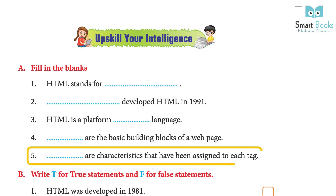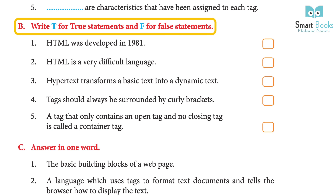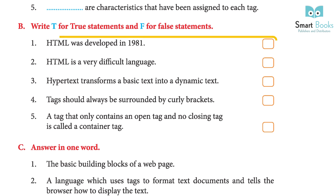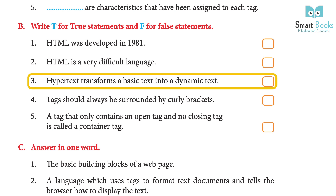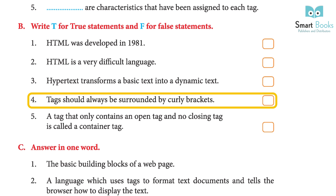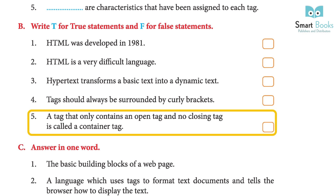Fill in the blanks continued: 4. Blank are the basic building blocks of a web page – Answer: Tags. 5. Blank are characteristics that have been assigned to each tag – Answer: Attributes. Write T for true and F for false: 1. HTML was developed in 1981 – False. 2. HTML is a very difficult language – False. 3. Hypertext transforms a basic text into a dynamic text – False.